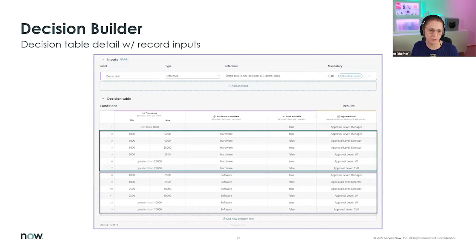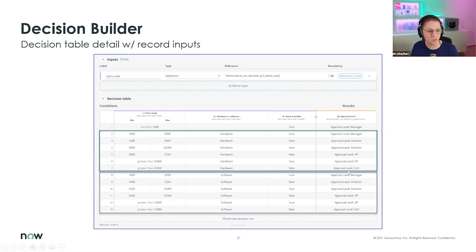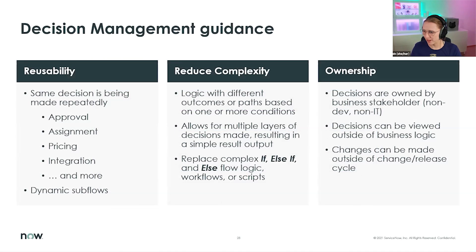Here's what it looks like in full view with record inputs — different fields from the same record represented in the table. As you may remember the two tables I showed before — hardware and software — in this case we can make all of the decisions in the same table.